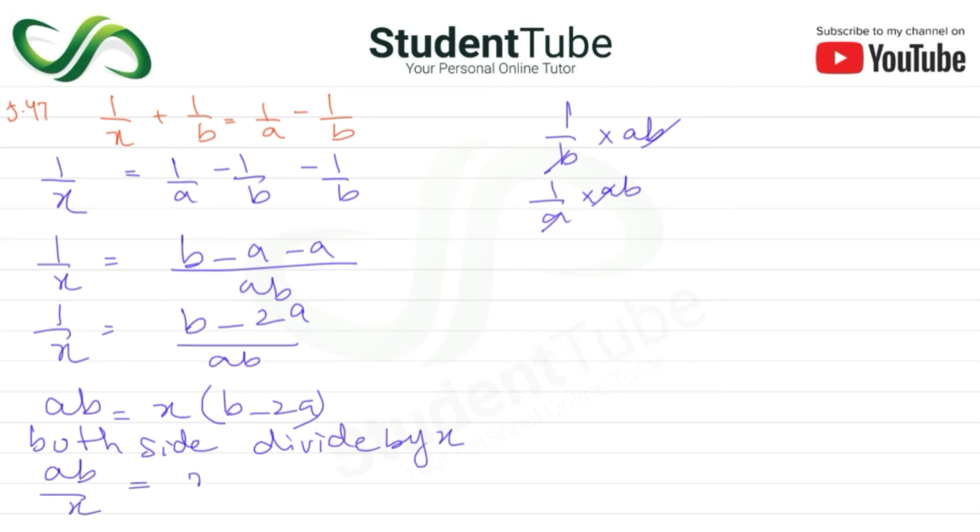So ab/x = (b - 2a)/x. The x cancels, so ab/x = b - 2a. Now x is dividing here, it will go there, and (b - 2a) will come here.